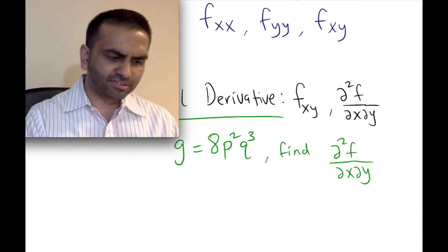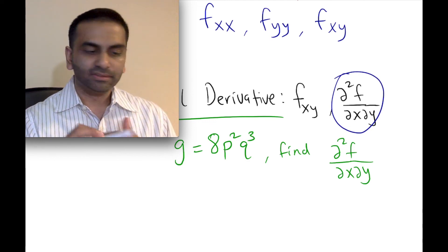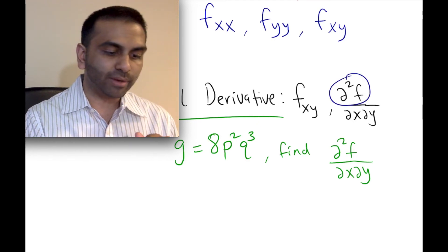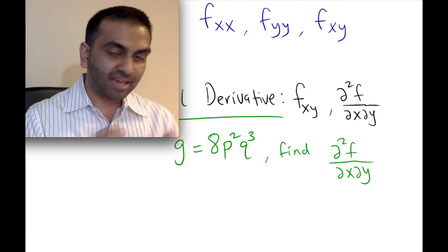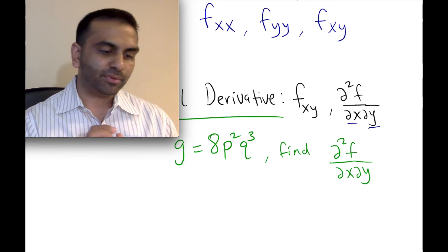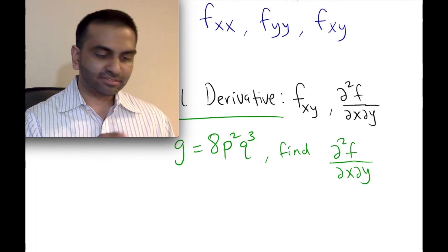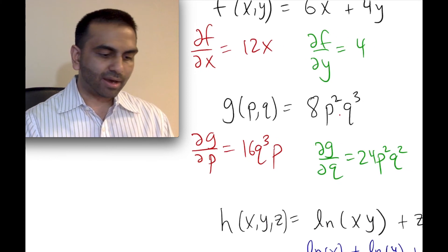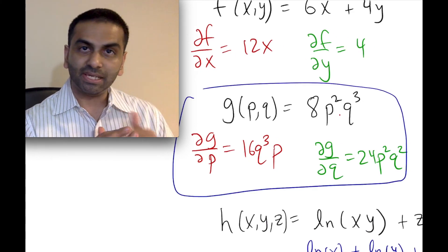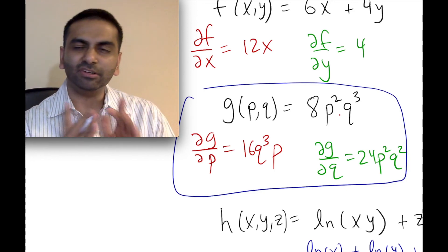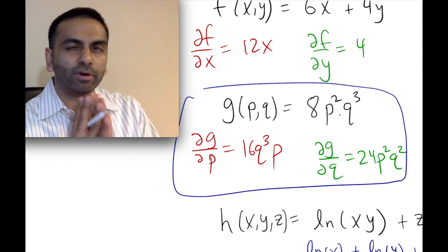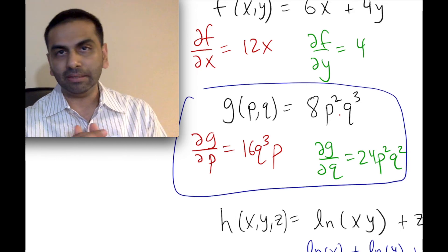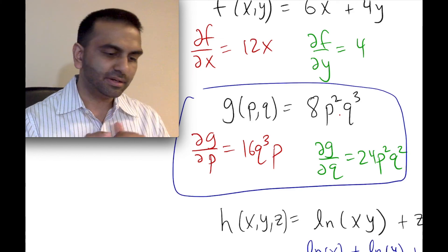The notation for a cross-partial is like d²f over dx dy, since we're doing it once with respect to y and once with respect to x. Now using our earlier function g(p, q) = 8p²q³, we're asked to find the cross-partial derivative with respect to p then q. A key question: does the order matter — first p then q, or first q then p? The answer is no, it doesn't matter. Let's verify this by doing it both ways.